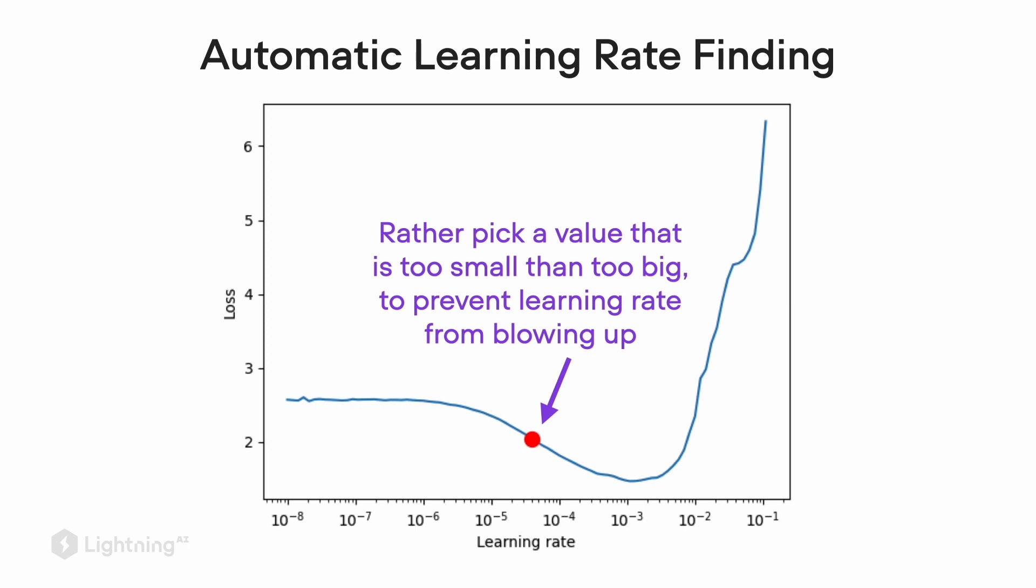On the other hand, if we had a value that is too big, what can happen is that the loss will explode and the network won't learn at all. So rather to be on the safe side, it's better to pick a value that is slightly too small.